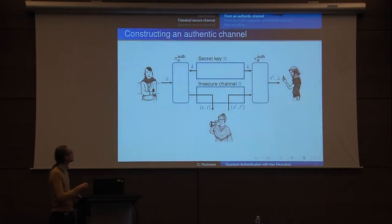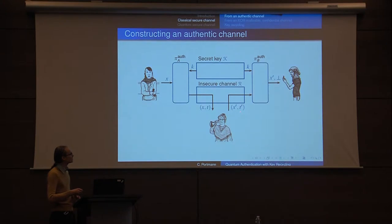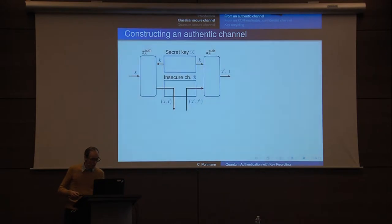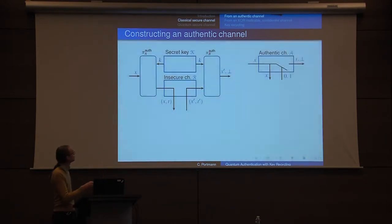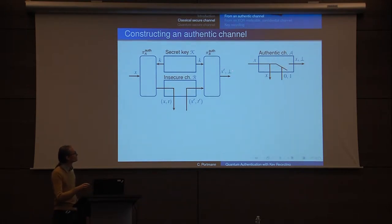The boxes with little round corners are local operations Alice and Bob can do with their interfaces. This is Alice's protocol: she provides it with a message, gets a key, generates a tag. Eve can change the tag, and on the other side Bob is going to check if it's a valid tag and either accept X′ or reject it.